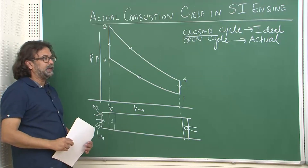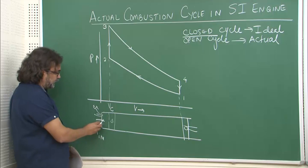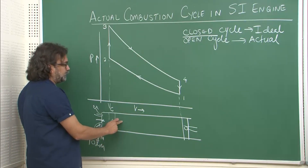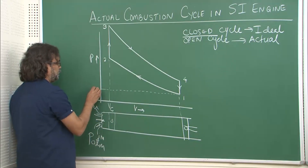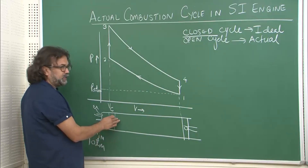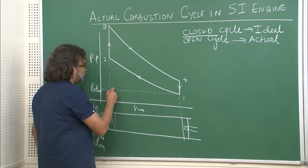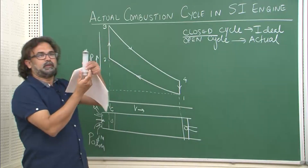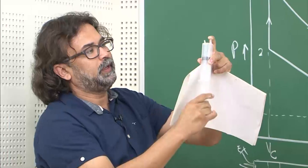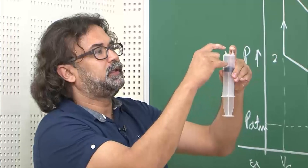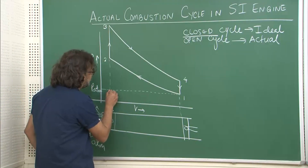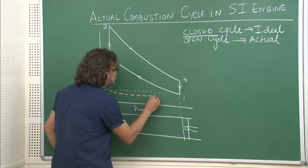The second difference concerns how air is inducted into the system. When the inlet valve opens and the piston moves back, the internal pressure must be somewhat lower than atmospheric pressure in order to draw air in. So during the suction stroke, you will see on the PV diagram that the actual cycle has an inlet stroke that runs slightly below atmospheric pressure.